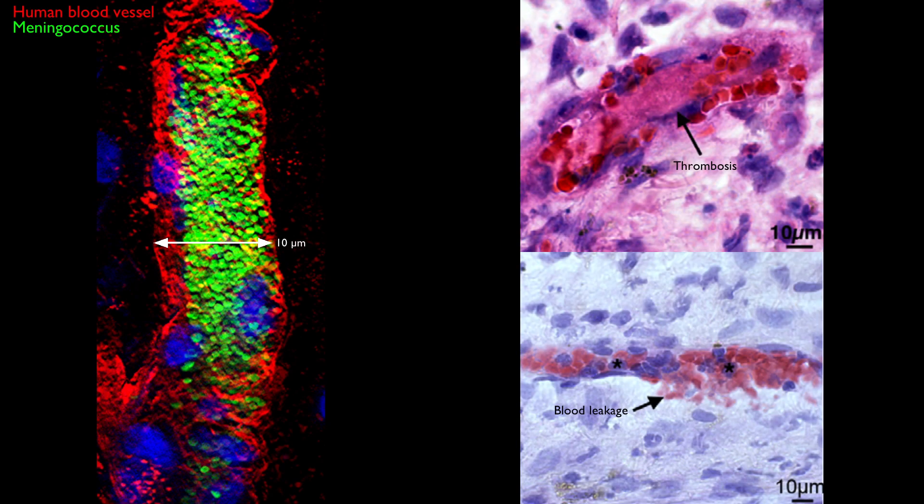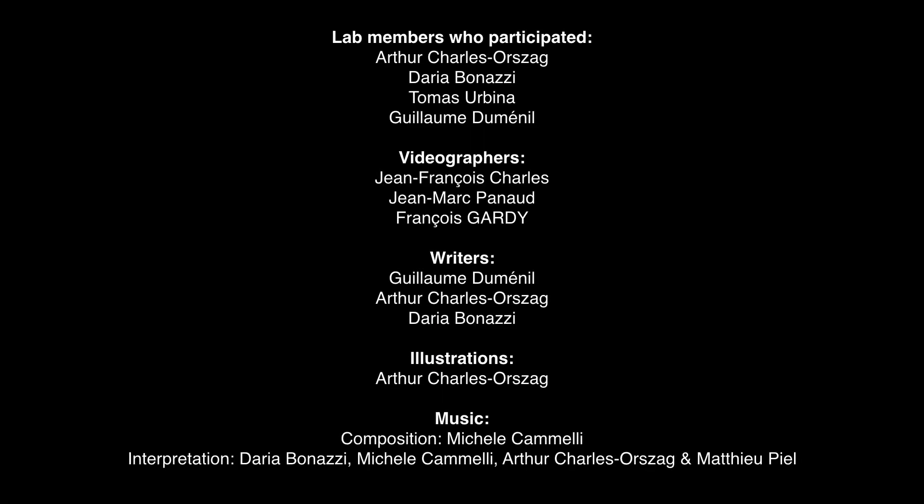Eventually, bacterial clusters lead to blood vessel rupture and vascular leakage, and that is what causes the purpuric lesions and the organ failure that we observe in the patients. We progressively have a better understanding of the disease, and this opens new avenues of research, in particular for our ability to kill or remove bacteria inside the blood vessels. We need to work together and collaborate with pharmaceutical companies to make this happen.